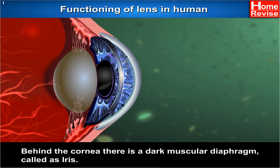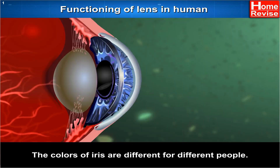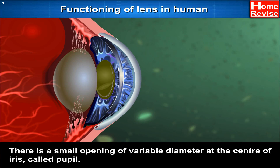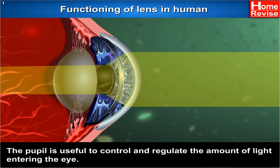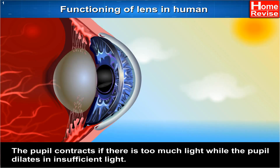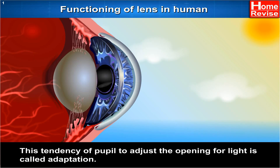Behind the cornea, there is a dark muscular diaphragm called the iris. The colours of the iris are different for different people. There is a small opening of variable diameter at the centre of the iris called the pupil. The pupil controls and regulates the amount of light entering the eye. The pupil contracts if there is too much light, while the pupil dilates in insufficient light. This tendency of the pupil to adjust the opening for light is called adaptation.